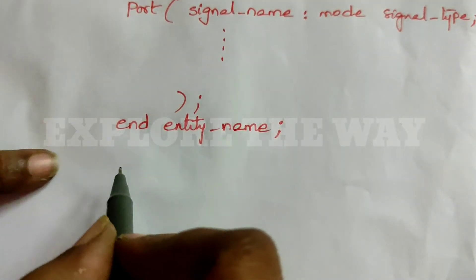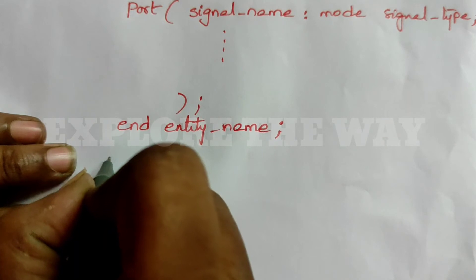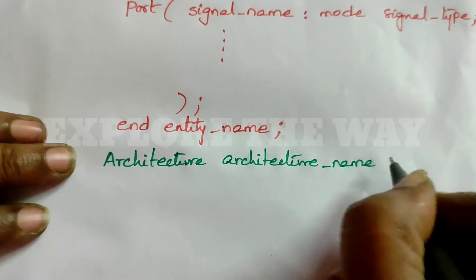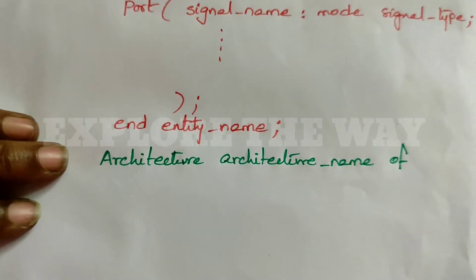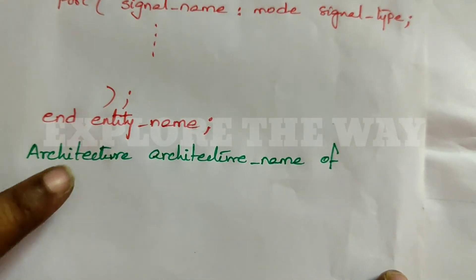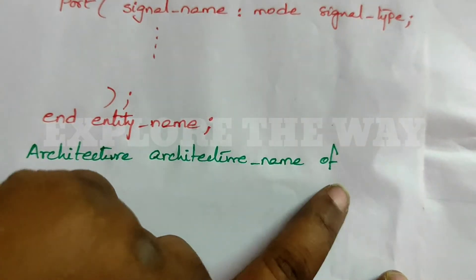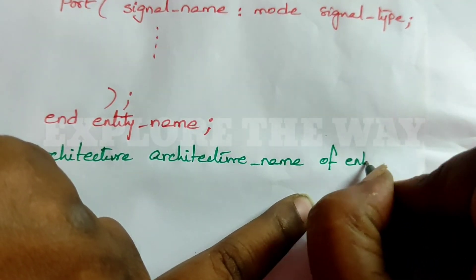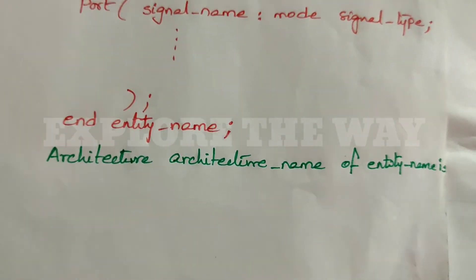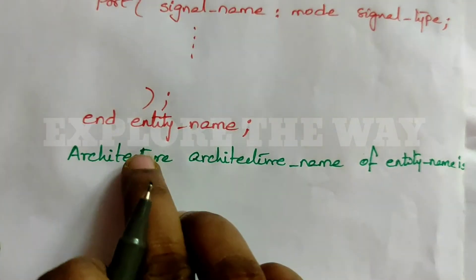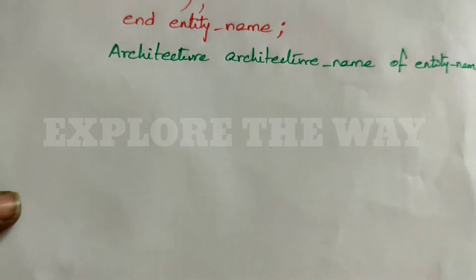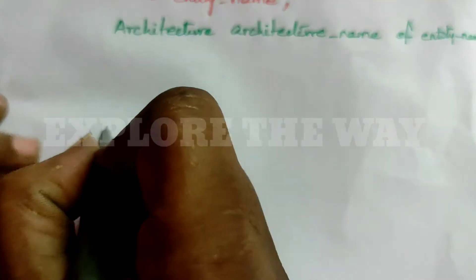Coming to the next part, that is architecture. Start with the keyword 'architecture', then write the name of the architecture. This is the architecture for this particular entity, so you write: 'architecture name of entity name is'.